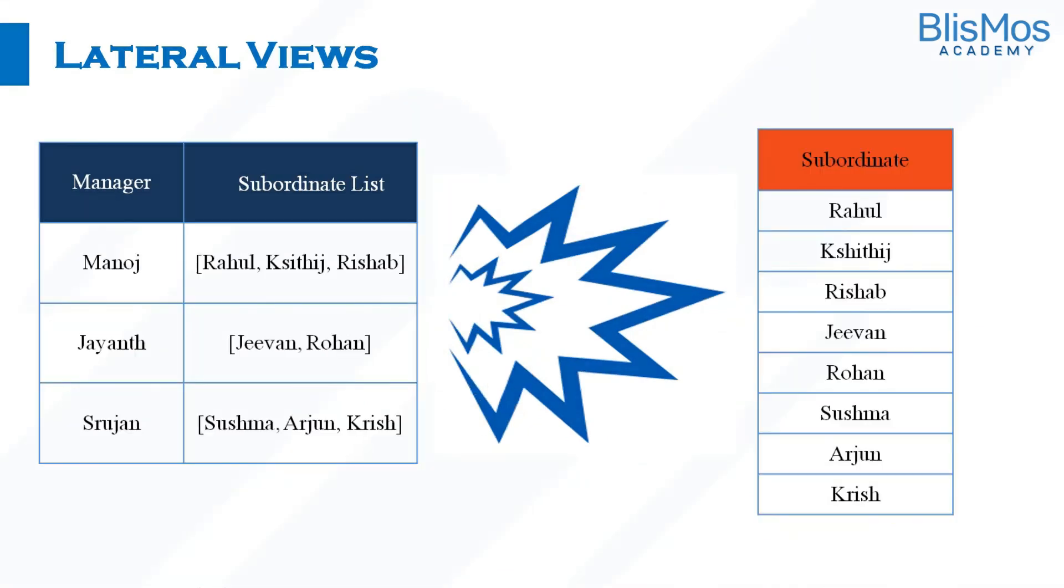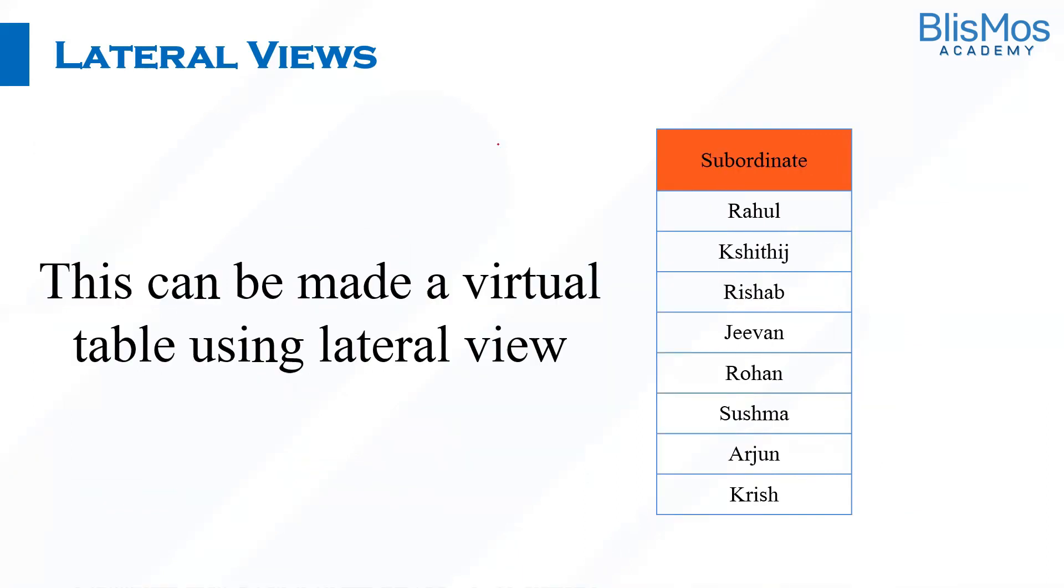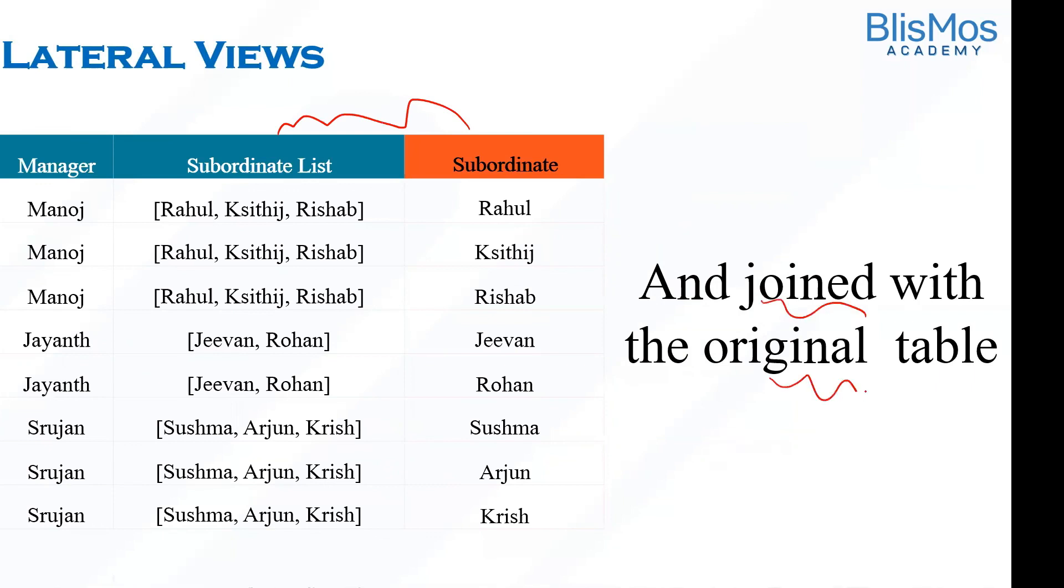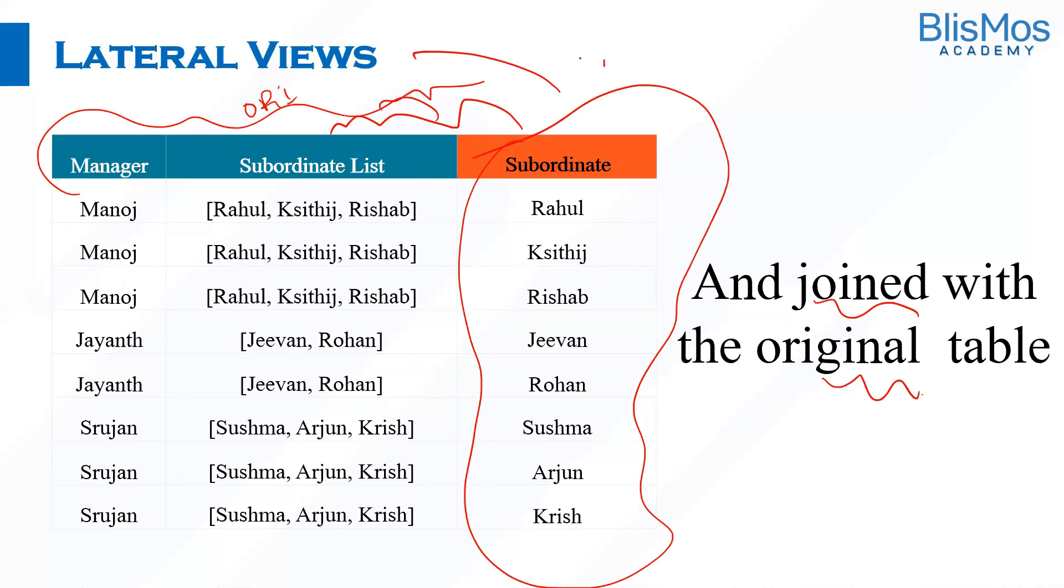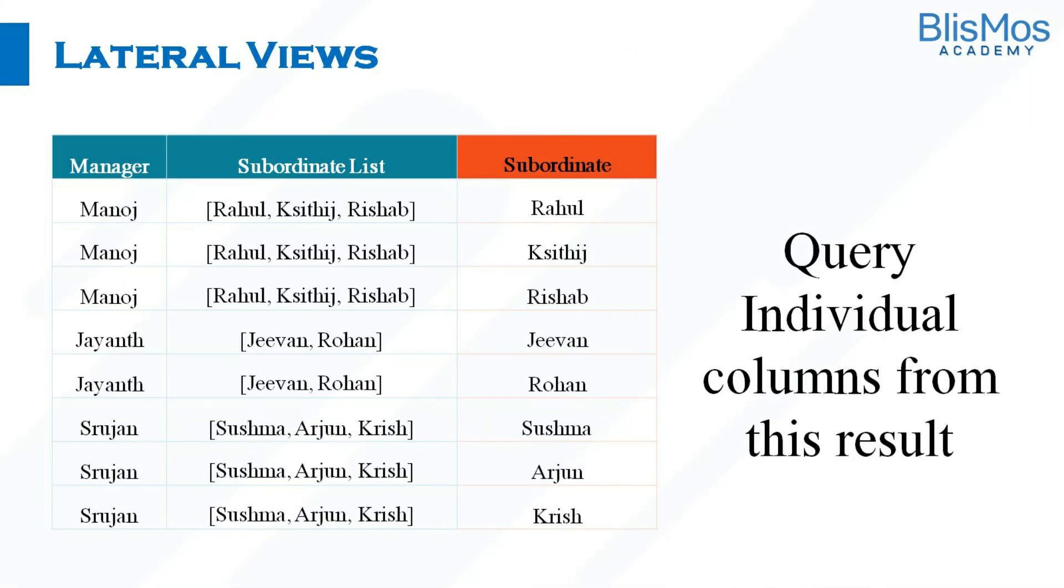So explode creates the lateral views and they can be joined with the original table to have complex queries. This is the lateral view of this particular column. As we discussed, this can be made a virtual table using a lateral view. And we can use this and join this with the original table. In this case, you can see this is the lateral view and this is the original table. Both of them can be joined.